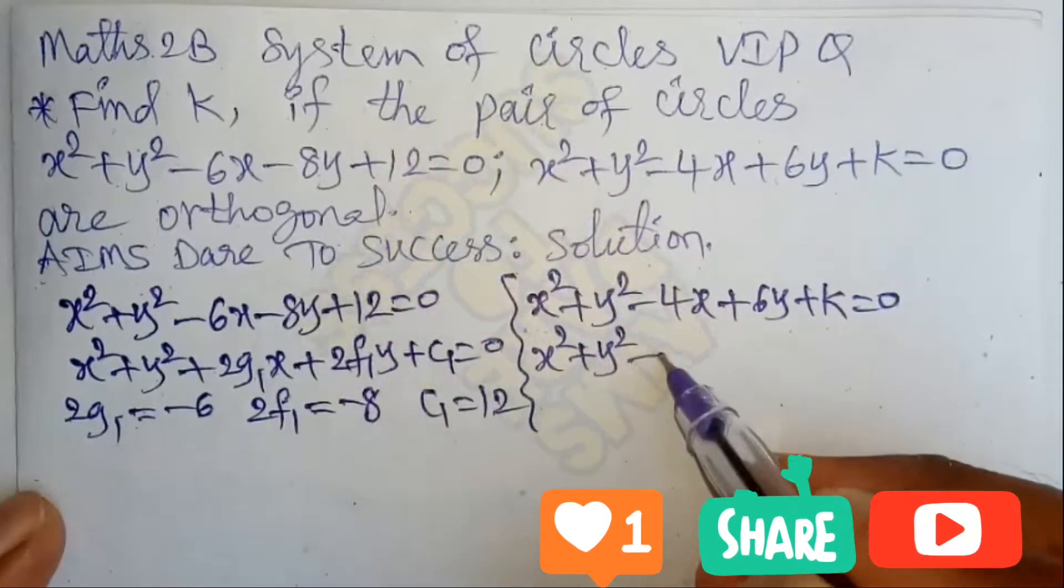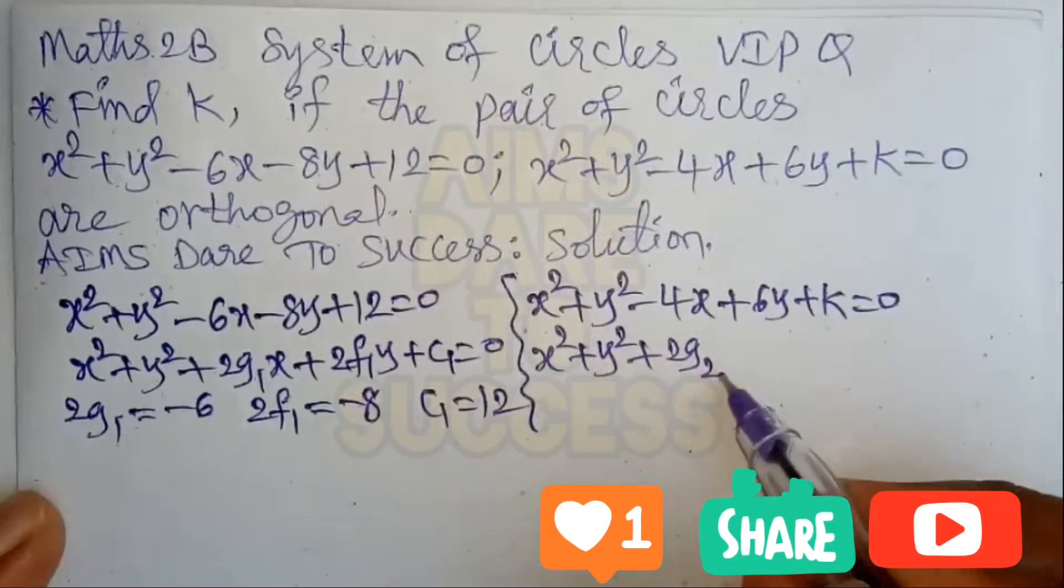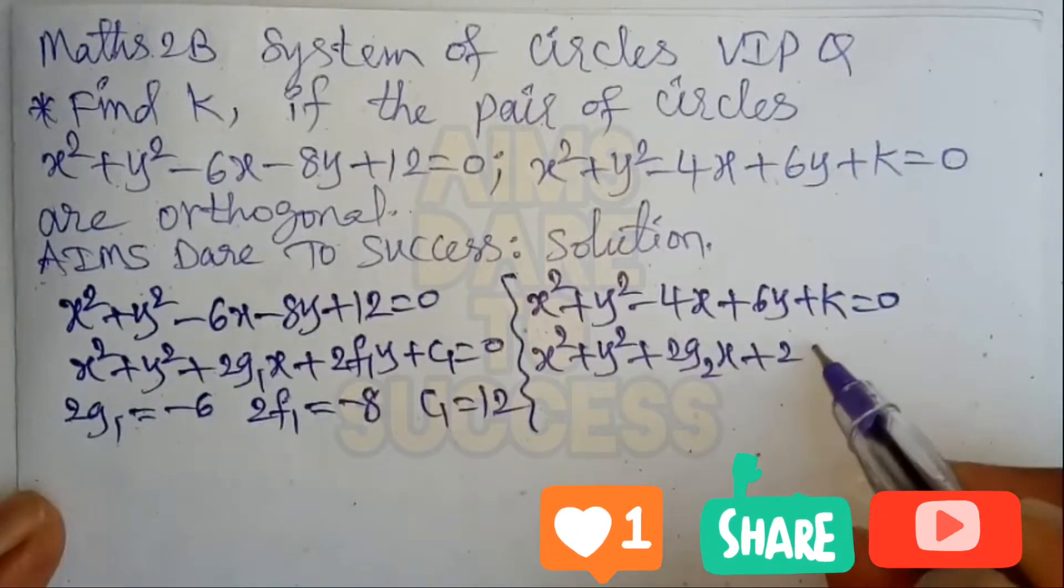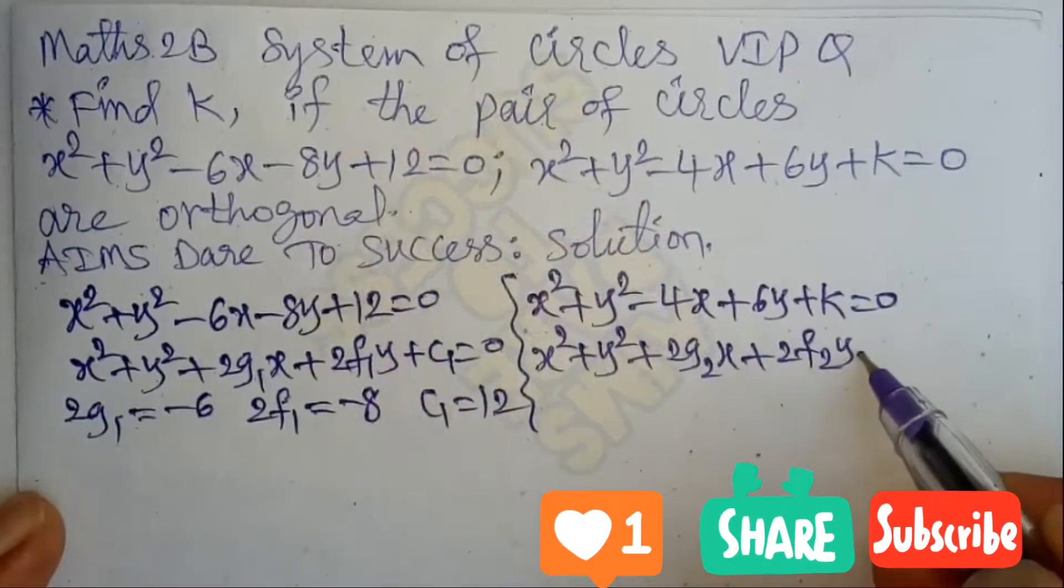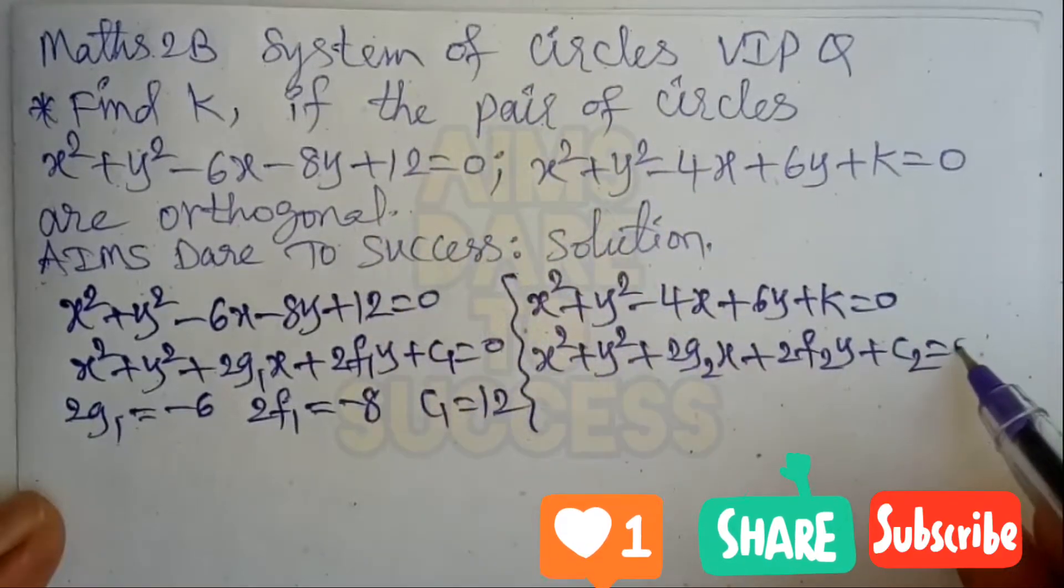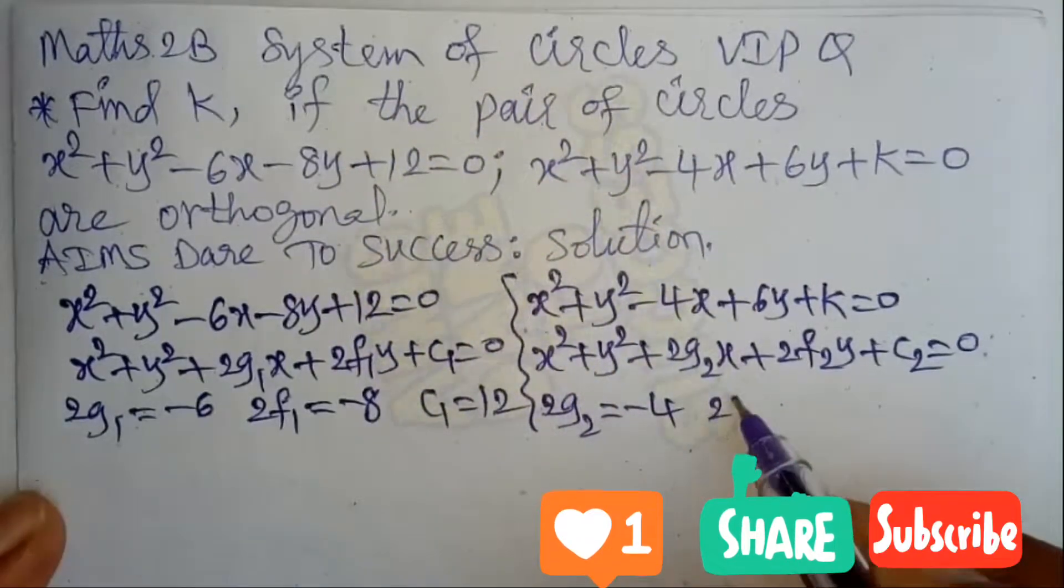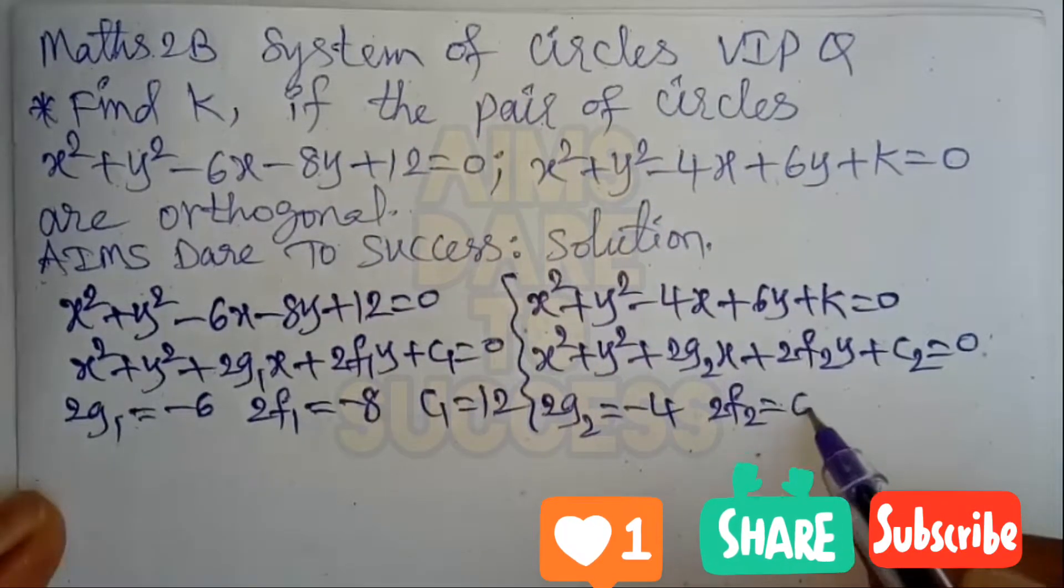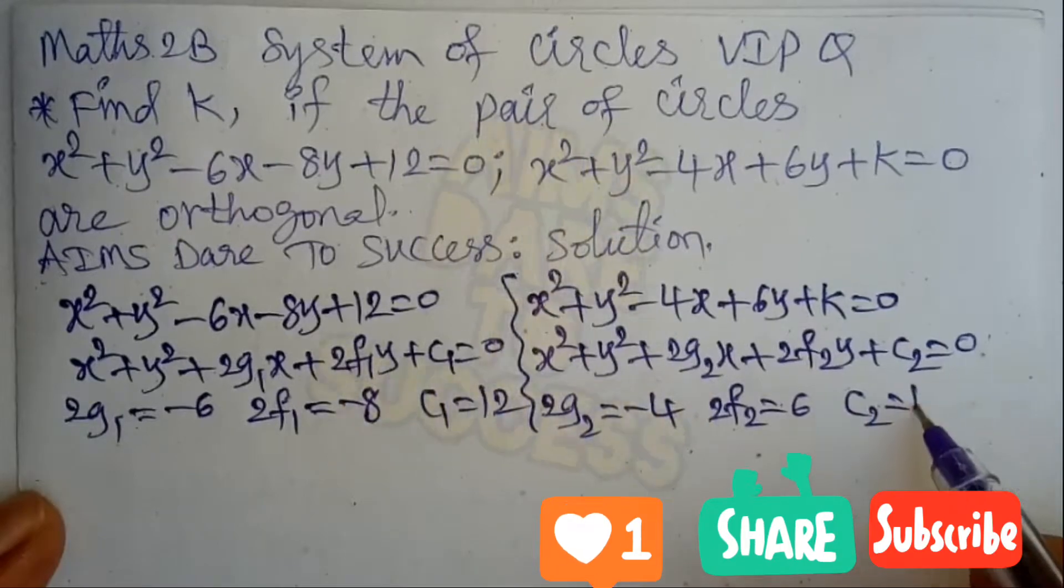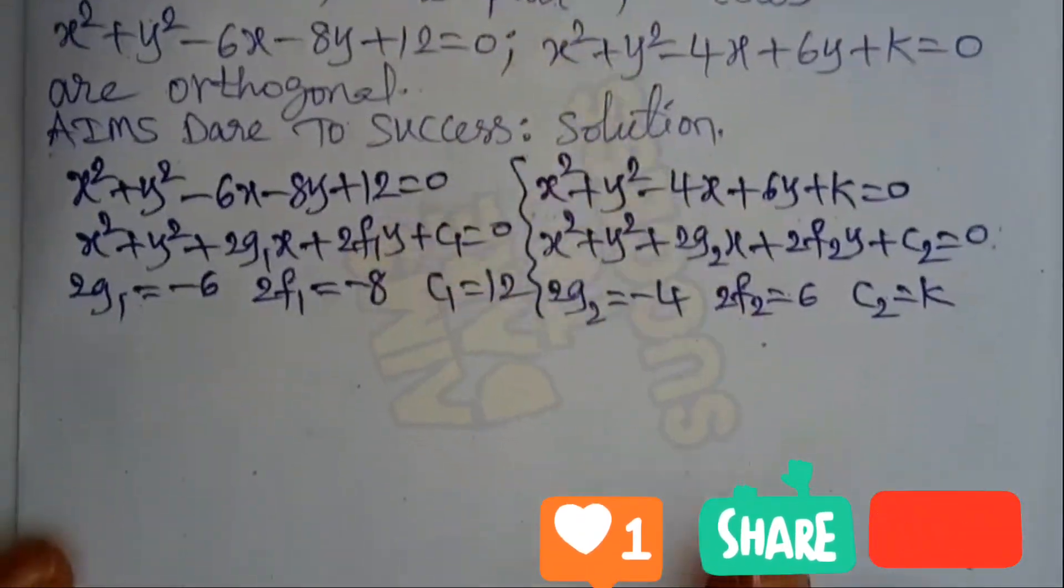My dear students, when you have two circles you will take like this: first circle 2g₁, 2f₁, c₁; second circle 2g₂, 2f₂, c₂. Comparing x coefficients we get 2g₂ = -4, comparing y coefficients 2f₂ = 6, comparing constant terms c₂ = k.